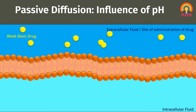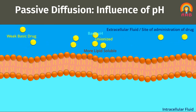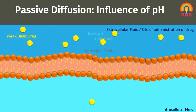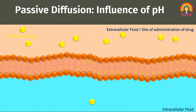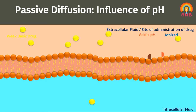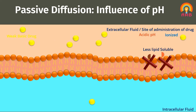Similarly, weak basic drugs in a basic medium remain unionized and easily diffuse through the membrane very rapidly. But the same weak basic drug in an acidic medium gets ionized and becomes less lipid-soluble, and is unable to cross the membrane. Thus, passive diffusion of such weak acidic or weak basic drugs is dependent on the pH of the environment in which the drug is present.